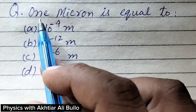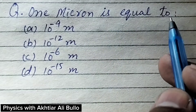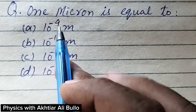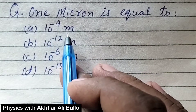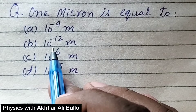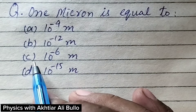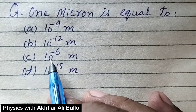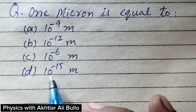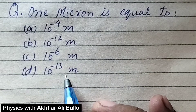The question is: 1 micron is equal to — a) 10 raised to the power minus 9 meter, b) 10 raised to the power minus 12 meter, c) 10 raised to the power minus 6 meter, d) 10 raised to the power minus 15 meter.